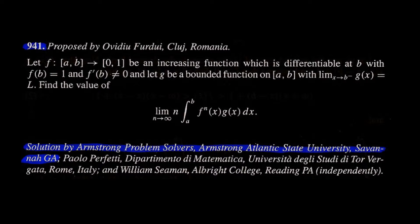The f superscript n in the integrand function means the nth power. Since the values of f are between 0 and 1, the nth powers will bring the values down toward 0, but not in uniform fashion, since f of b is 1.